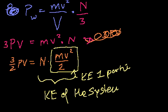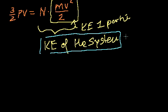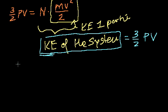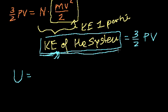We've established that the kinetic energy of the system equals (3/2) times the pressure times the volume. And for a monoatomic ideal gas, all the energy in the system is kinetic energy — so the internal energy of the system equals (3/2)PV.